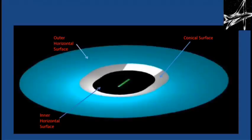The next surface is the outer horizontal surface, which is located on the outer periphery of the conical surface, the figure of which is shown on screen. The green strip is the runway, the black horizontal surface is the inner horizontal surface, the grey extension is the conical surface, and the bluish-green surface is the outer horizontal surface.